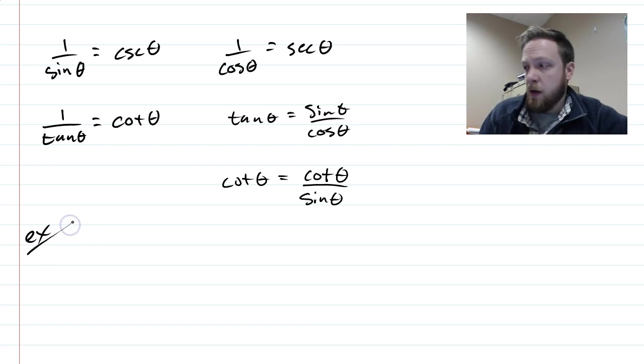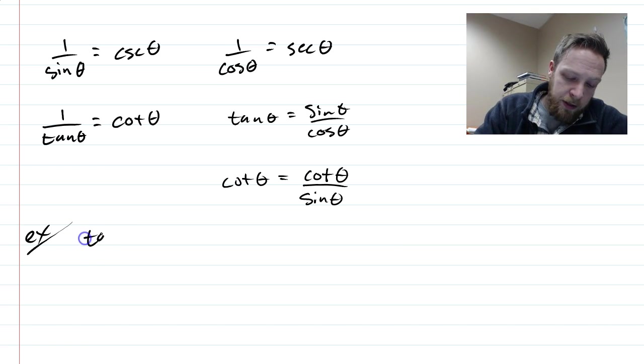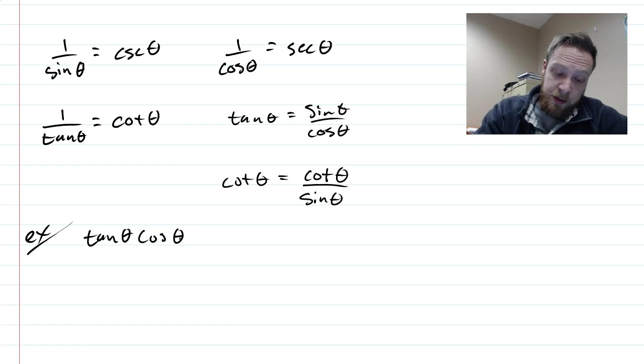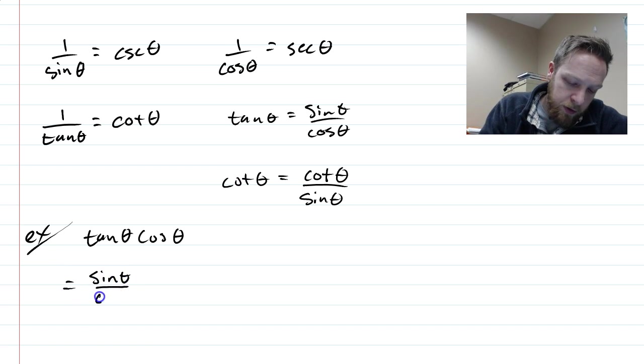For example, in the beginning, they're not going to ask you to do identities. What they're going to ask you to do is to just simplify. So they might give you something like tan θ times cos θ, and then their command is just simplify. When you simplify, the first thing you should do is change everything into sines and cosines. That is one of the strategies, the easiest strategy.